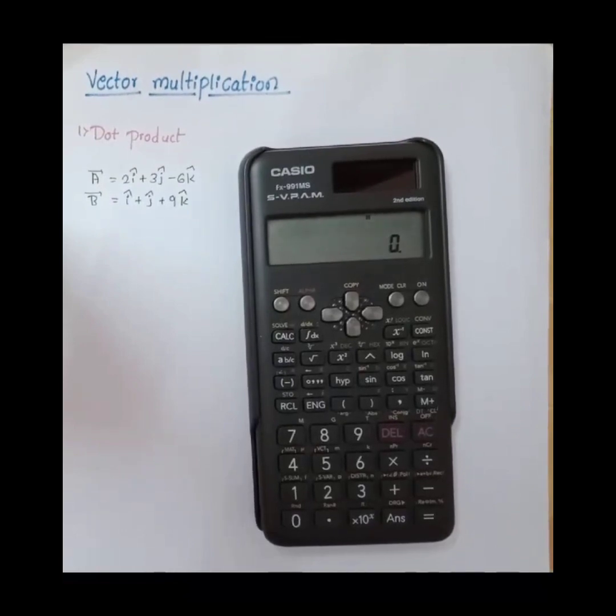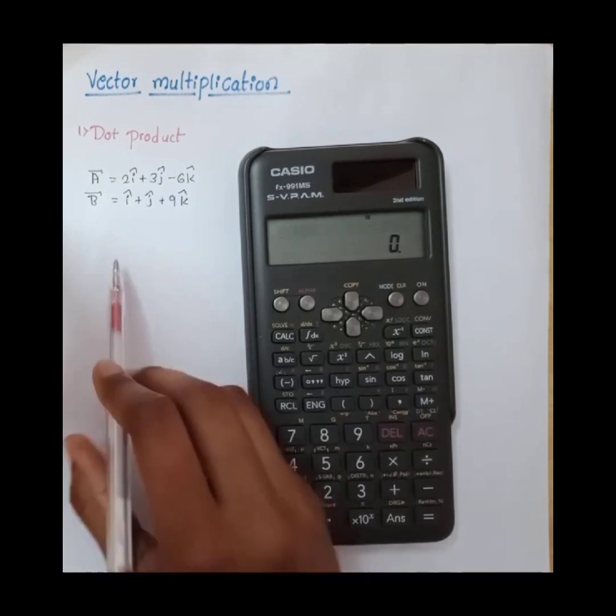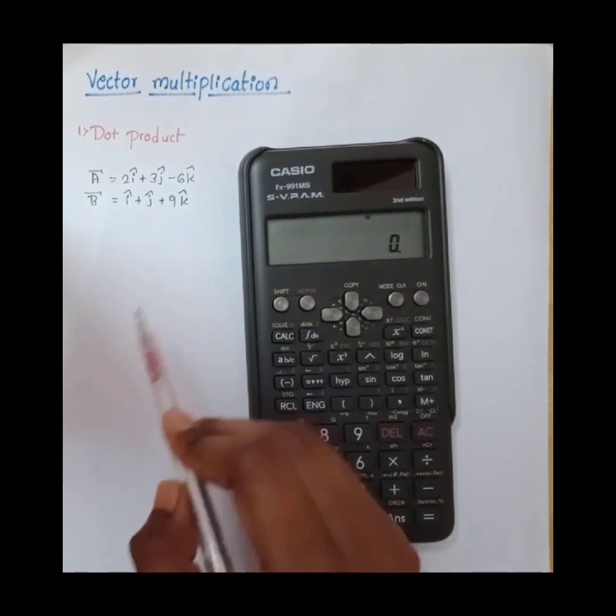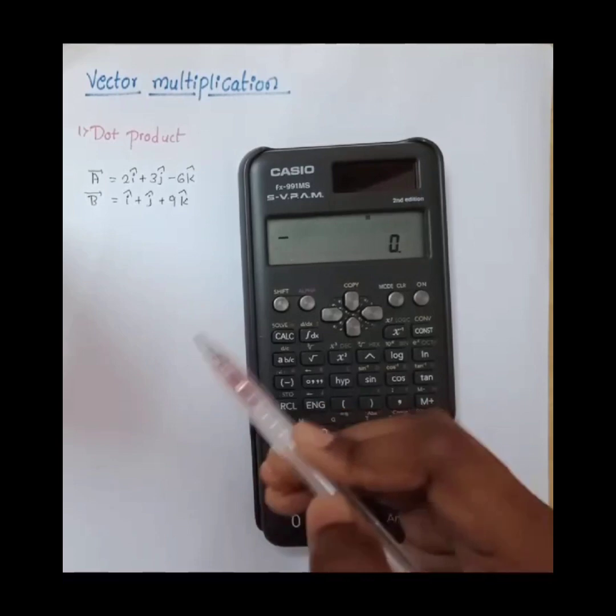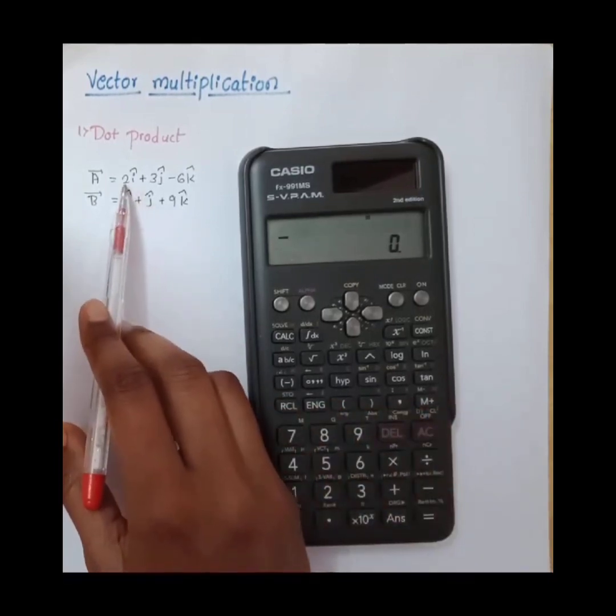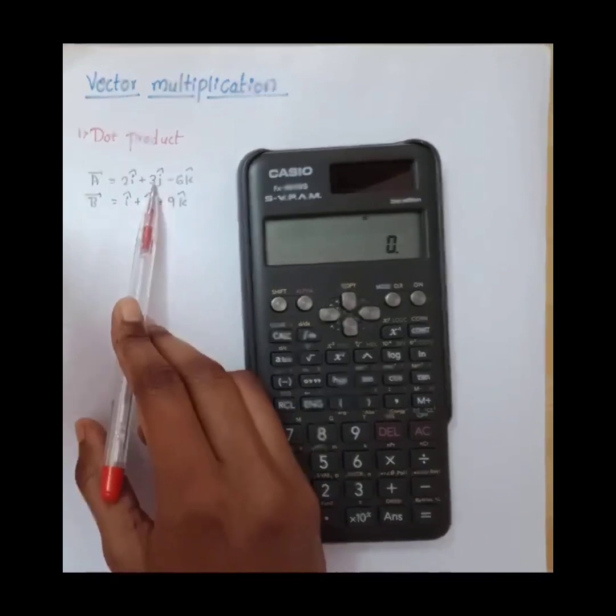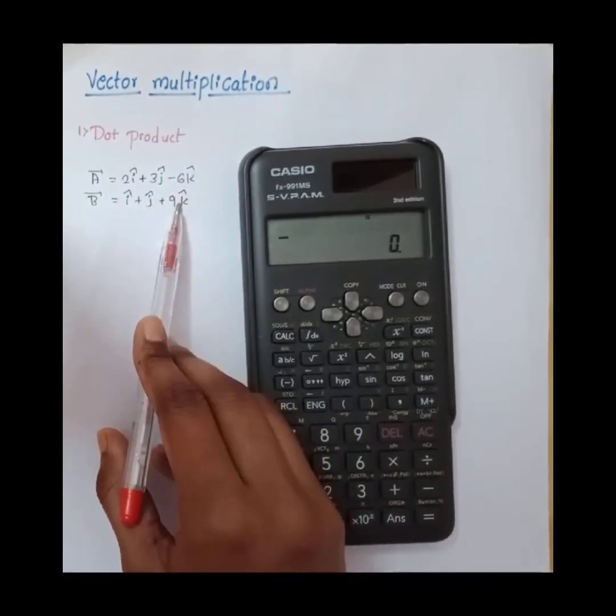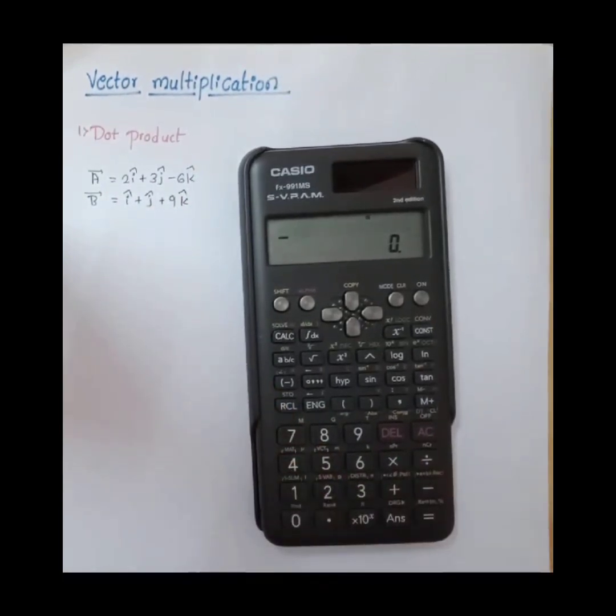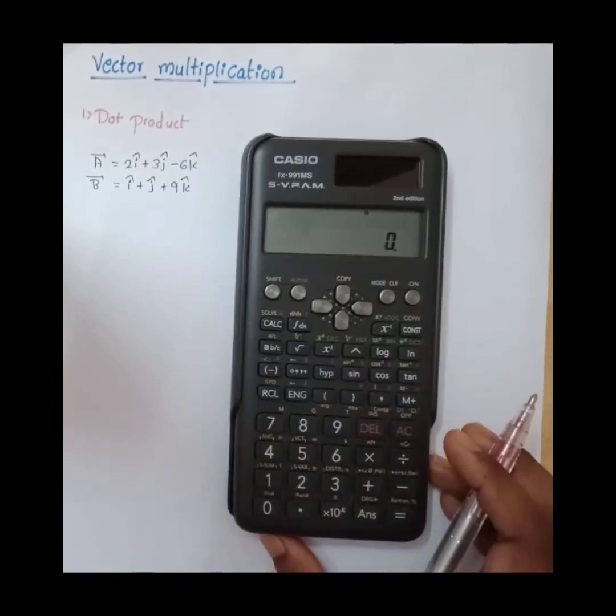Hello everyone, in this video let us know how to do vector multiplication by using scientific calculator. In general, how to find the dot product of two vectors? We simply multiply the ax·bx values, ay·by, az·bz. To check the answer whether it is correct or not, we can use the calculator.